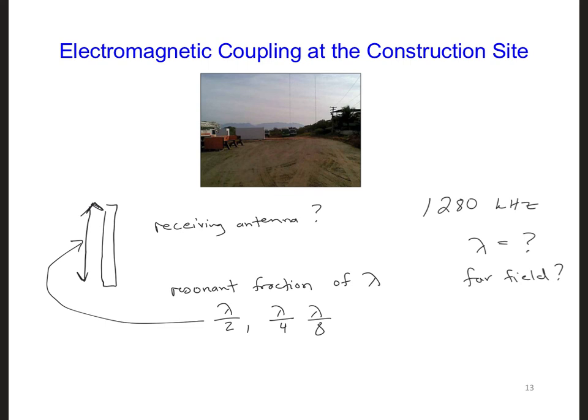Also compare the wavelength of the signal to the vertical dimensions of the metal crane. So let's say this is about 60 meters, the vertical section of the cranes that we need to be concerned about.